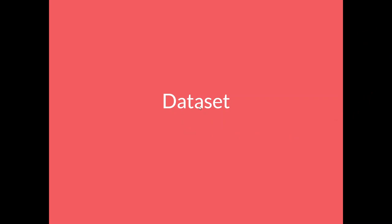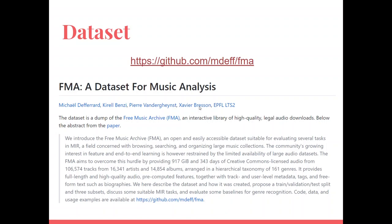The dataset used for this project is the FMA dataset, which is an interactive library of high-quality legal audio downloads. This is open and easily accessible and suitable for this kind of projects. It provides 917GB of Creative Commons licensed audio from more than 100,000 tracks with their corresponding artists, albums and genres. They come along with metadata and tags such as biographies and more. There are various sizes of MP3-encoded audio data, which goes from small sets with 7GB to full sets with near 900GB. We used a small one for this project as we thought it was enough having 8,000 tracks.